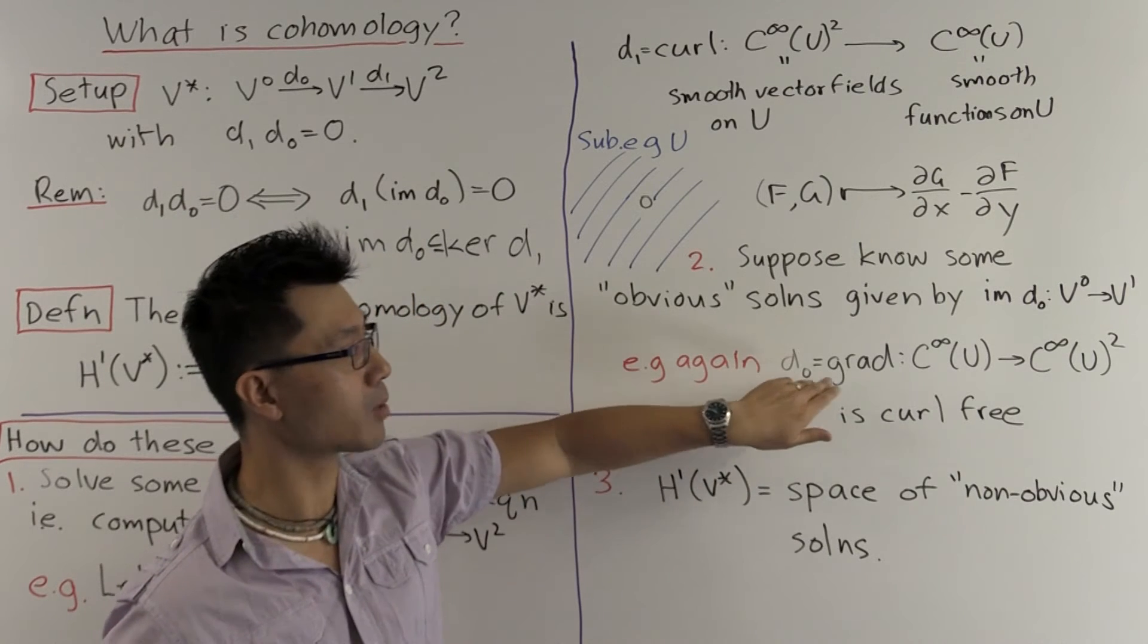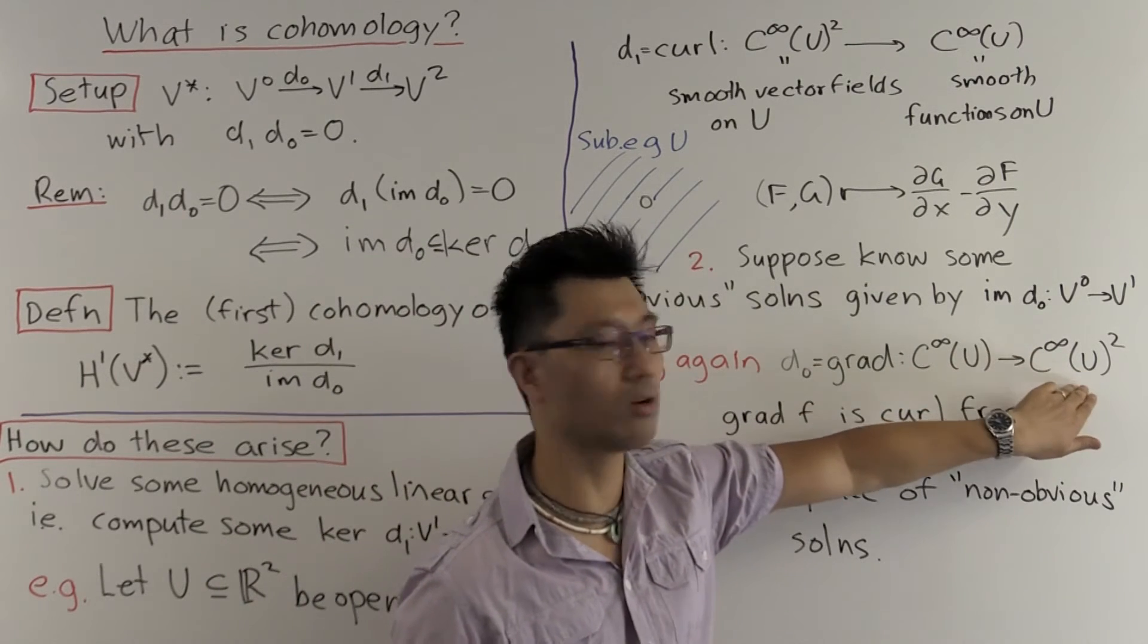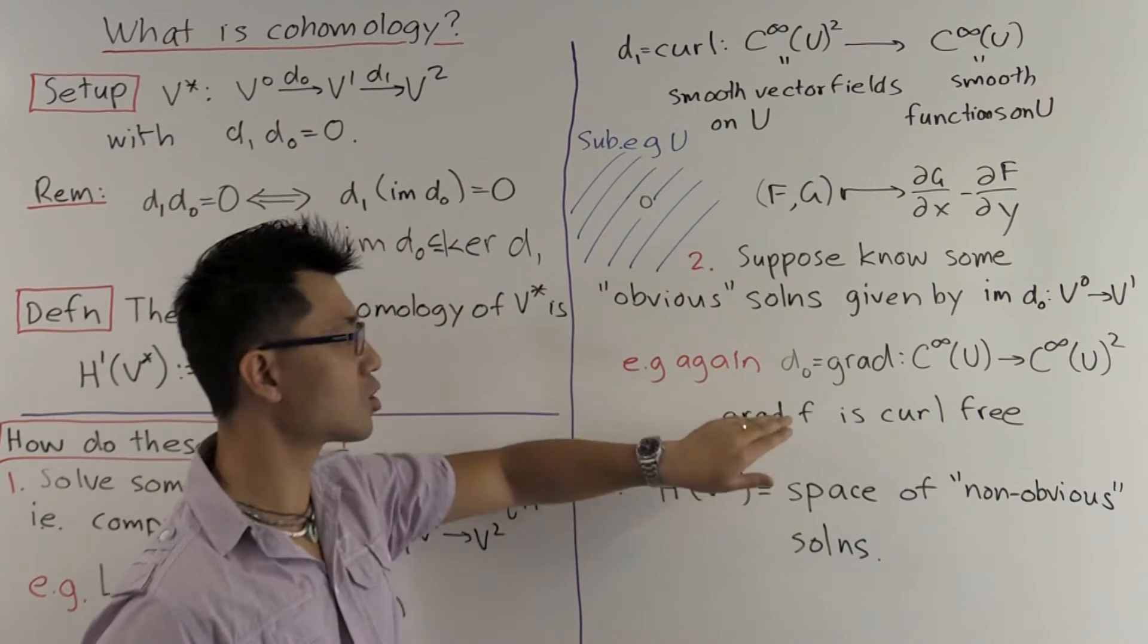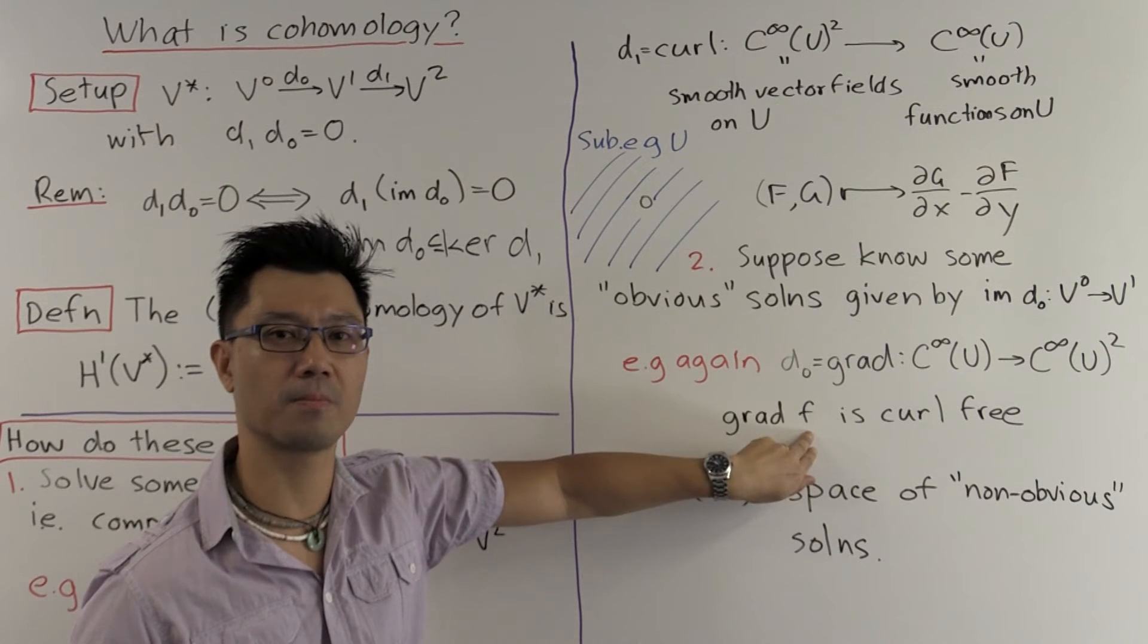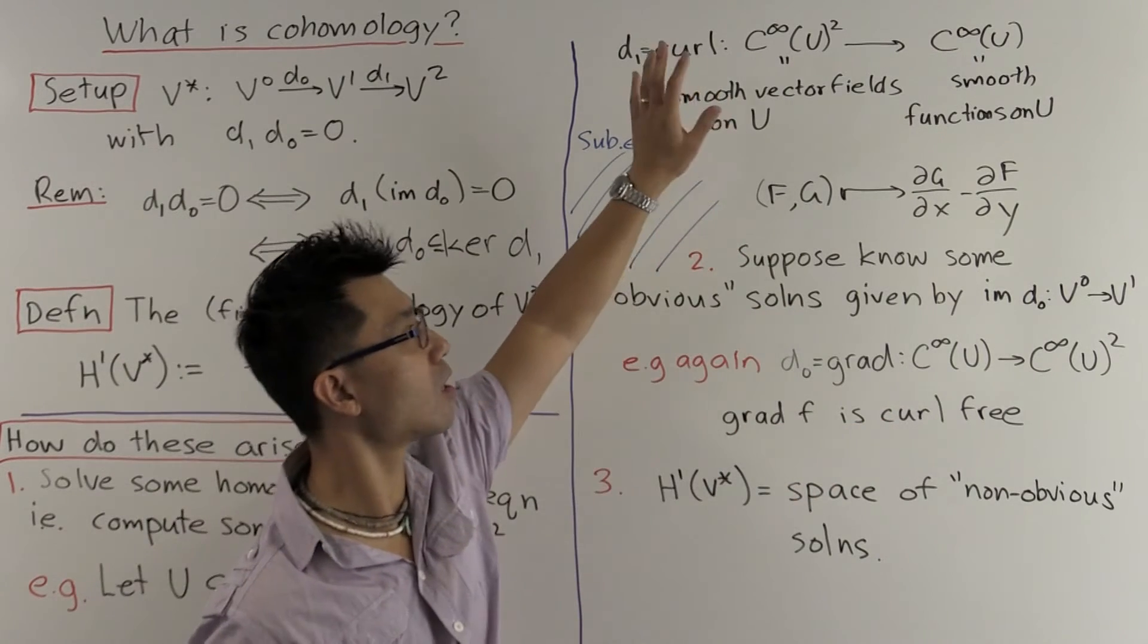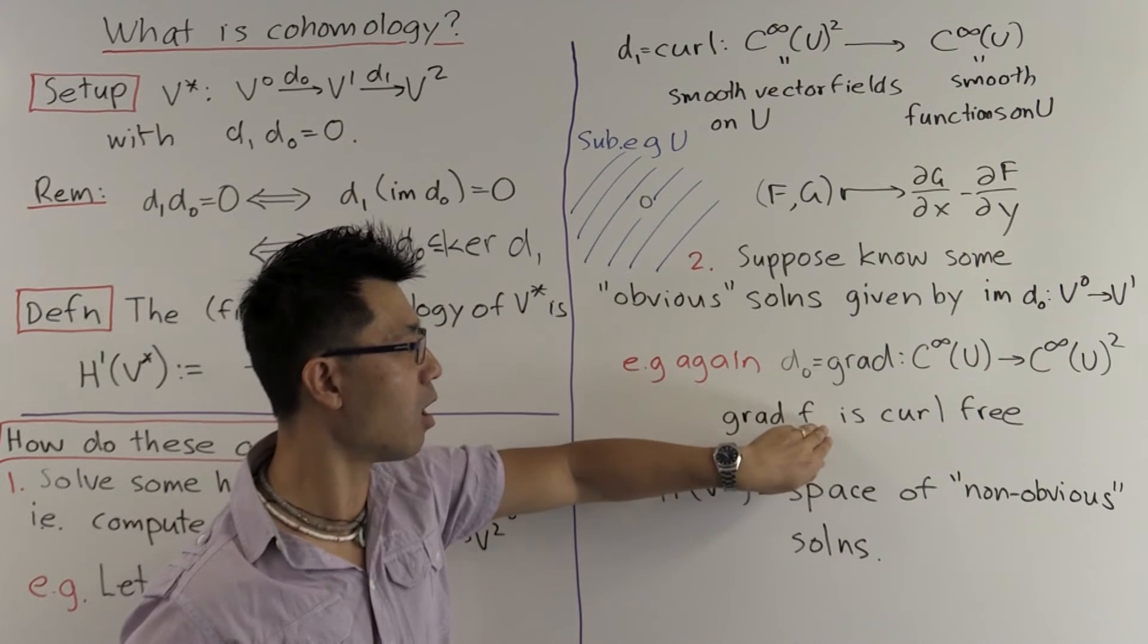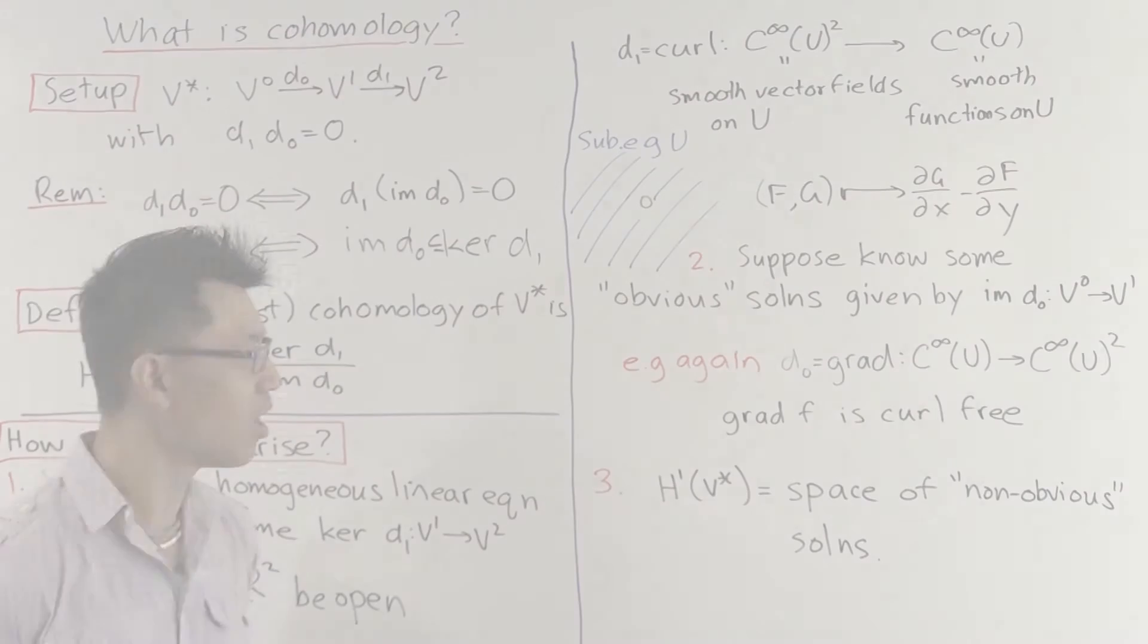So the solutions live inside V1. And so we're looking at the image of some linear map d0 from V0 to V1. OK, so let's look at a simple example of this. Let's go back to this example here, where d1 was this curl map. The d0 map, I'm going to make the gradient. The gradient sends a smooth function to a vector field. And one of the things that we know is that an easy way to get a curl-free vector field is to look at the gradient of a scalar potential function f. That's always curl-free.